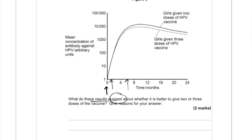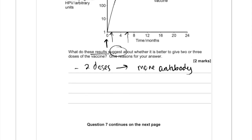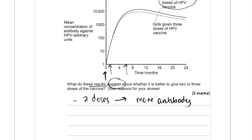A vaccine would be better if it produces a higher concentration of antibody. Looking at the graph, it's the girls who've been given two doses who have more antibody, so two doses is better. Looking more closely, the girls given a second vaccination at one month — that hasn't led to the production of any more antibody. At one month it's exactly the same, so it's actually completely ineffective.